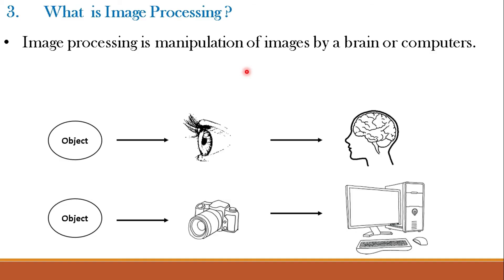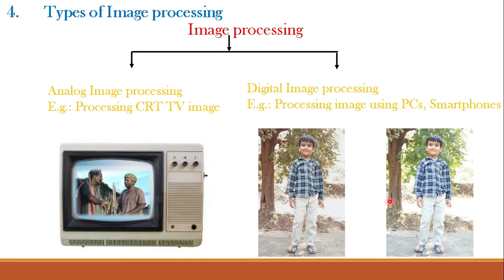Image processing is a manipulation of images by a brain or computers. For example, your eyes see some object, send a signal to your brain, and your brain takes action — that is human image processing. For digital image processing, we manipulate images using computers: in place of the eye, a camera captures the image, and then the computer processes it. Processing done by smartphones, digital cameras, and computers is all digital image processing. Image processing can be classified into two types: analog image processing and digital image processing.